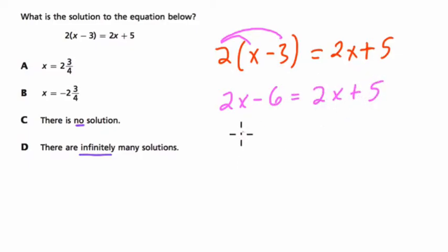All right, I want my x's on the same side. So what I'm going to do is subtract 2x from both sides. And here, what happens? Well, 2x minus 2x is 0. Minus 6 is still there, so it's 0 minus 6.